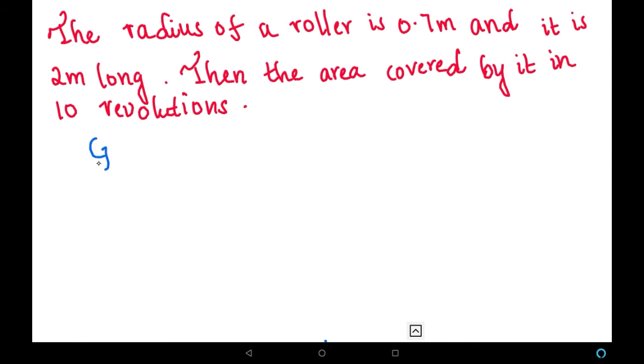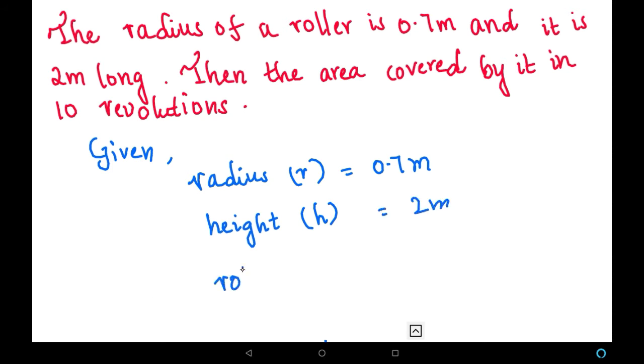And what we have to find is the area covered by that roller in 10 revolutions. So let us start solving. Let us write given values first. Radius, which is denoted by r, is 0.7 meters. And then height, which is denoted by h, is given as 2 meters.